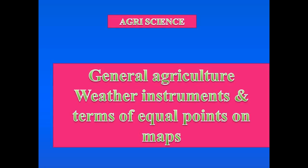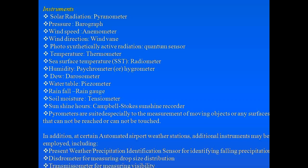Hello friends, here I am again to explain about general agriculture — specifically the weather instruments used for measuring various weather parameters, and also terms for equal points on maps, like various ISO terms used for explaining equal points on maps.